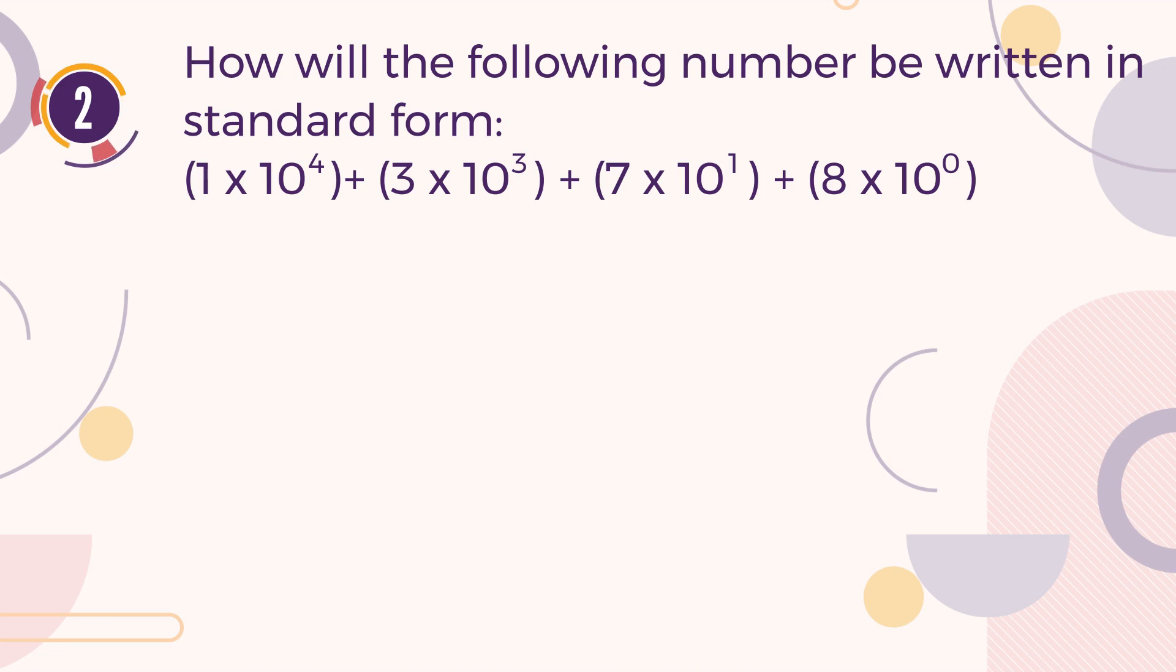Number 2. How will the following number be written in standard form? 1 multiplied by 10 to the power of 4, plus 3 multiplied by 10 to the power of 3, plus 7 multiplied by 10 to the power of 1, plus 8 multiplied by 10 to the power of 0. A. 137. B. 13,078. C. 1,378. D. 8,731.